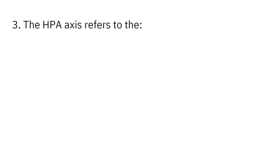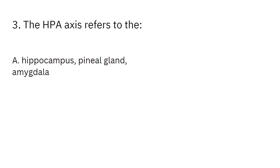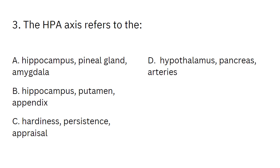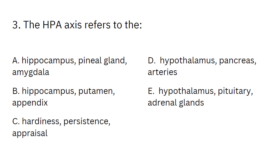The HPA axis refers to the... A) Hippocampus, pineal gland, amygdala. B) Hippocampus, putamen, appendix. C) Hardiness, persistence, appraisal. D) Hypothalamus, pancreas, arteries. E) Hypothalamus, pituitary, adrenal glands.